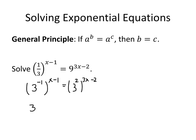On the left-hand side, when I multiply negative 1 by the quantity x minus 1, I get negative x plus 1. On the right-hand side I multiply 2 times 3x minus 2, and that gives me 6x minus 4. Now the bases are the same, so I can set the exponents equal to each other: negative x plus 1 equals 6x minus 4.